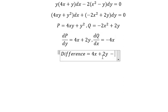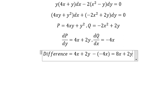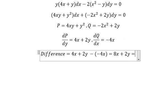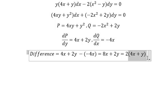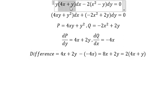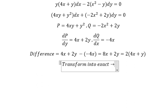Now we need to find the difference. So that means we have this one: we minus negative four X and we have eight X plus two Y. If I put number two outside, we can see that this factor is similar to this factor. In this case we need to transform into exact.